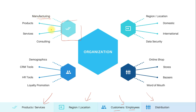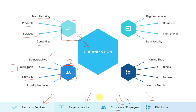The first entity is where the company is manufacturing a product, selling a product, or providing services or consulting. The second entity covers demographics — the company may have different tools like CRM and HR tools to manage customers and employees, handle promotions and marketing. The third entity is region and location — whether you operate domestically or internationally.